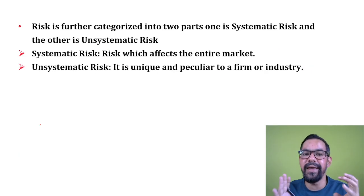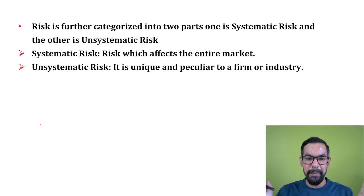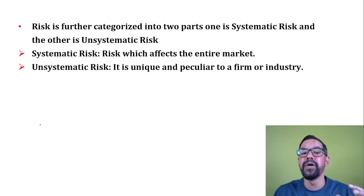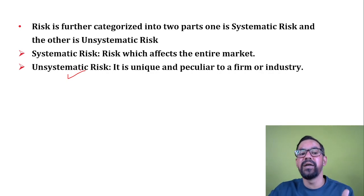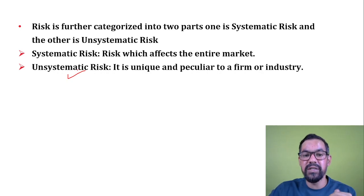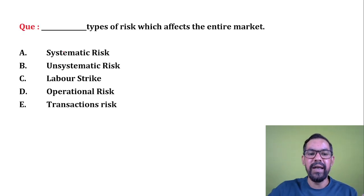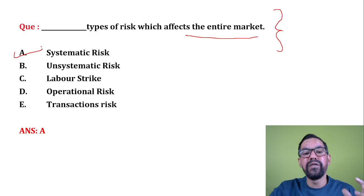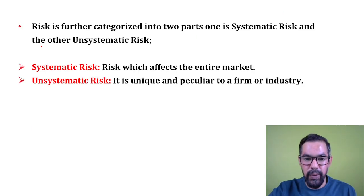Whenever you study risk in any sector, you find two types: systematic risk — unavoidable, uncontrollable, and impacting the entire economy or world economy, like recession. Unsystematic risk is peculiar to a firm or individual, like an employee strike at a bank or internet/system failure. These are avoidable and controllable. Next question: the type of risk that affects the entire market — the correct answer is systematic risk, since it is unavoidable in nature.